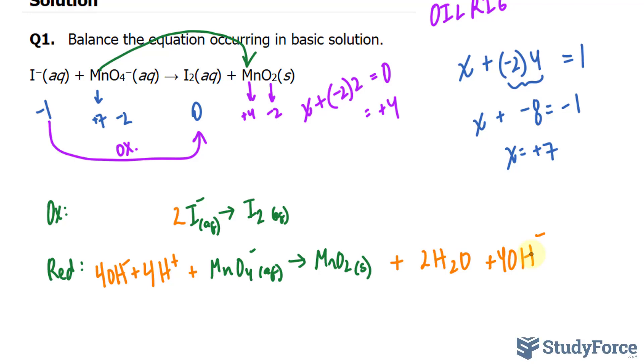The next part is to balance each of these half reactions with respect to their charge. We have a charge of two minus here and a charge of zero on the right side. So I'll write down plus two electrons on the right side. Now they're both at zero, neutral.